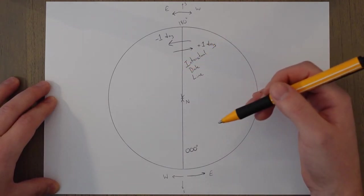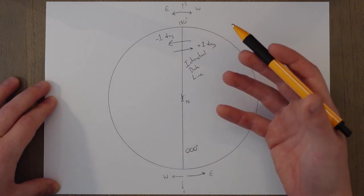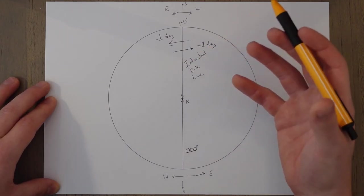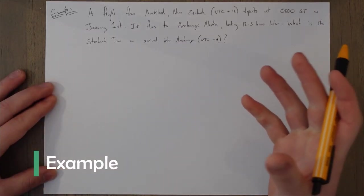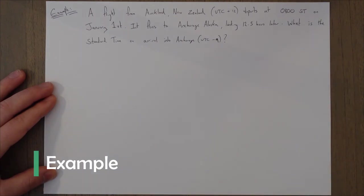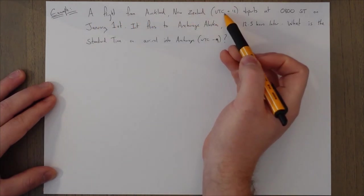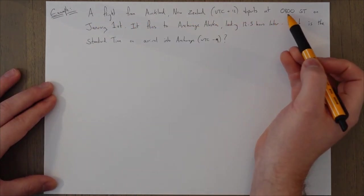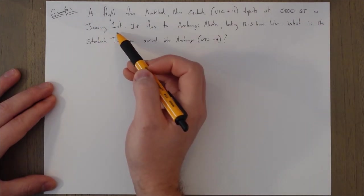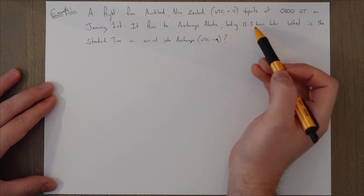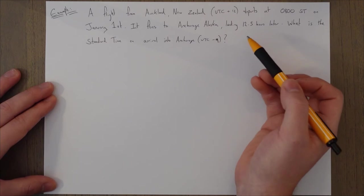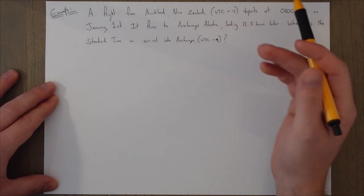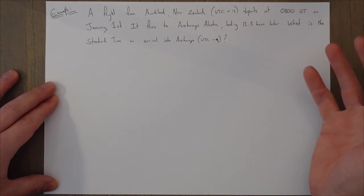I'll link a video down below with a good explanation on this as I think it's actually quite interesting but it's probably a bit too in depth for ATPL studies and not really that relevant. So if we throw in the international dateline into an example and some questions, we see some quite confusing things. So a flight from Auckland, New Zealand, UTC plus 12, departs at 0800 standard time on January the 1st. It flies to Anchorage, Alaska, landing 12 and a half hours later. What is the standard time on arrival into Anchorage, UTC minus 9? So the flight time might not be realistic, but that's the example we're going to use.